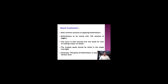Seed treatment is the most common practice of applying biofertilizers. Biofertilizers are mixed with a 10% solution of jaggery, which acts as a binder of biofertilizer organisms on seeds. This slurry is poured on the seeds so each seed gets coated, then air-dried in the shade — not in sunlight, as sunlight may reduce the microbial count. Generally, 750 to 1000 grams of biofertilizer is required per hectare for seed treatment.